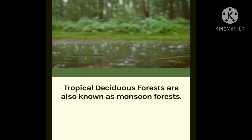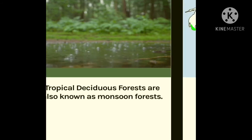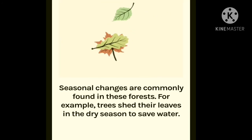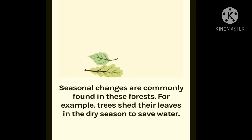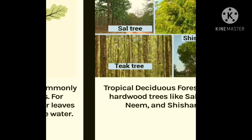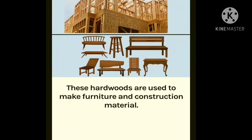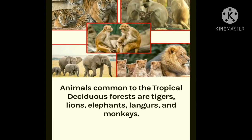The next type is tropical deciduous forests, also known as monsoon forests. These forests are commonly found in India, Northern Australia and Central America. Trees shed their leaves in the dry season to save water. Tropical deciduous forests have hardwood trees like sal, teak, neem and shisham, which are used to make furniture and construction materials. Animals common to these forests are tigers, lions, langurs and monkeys.